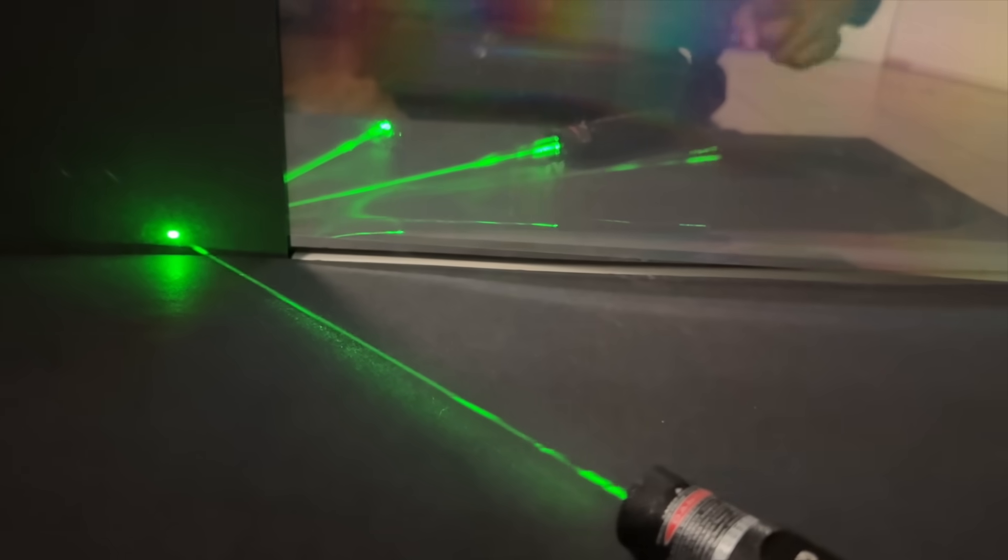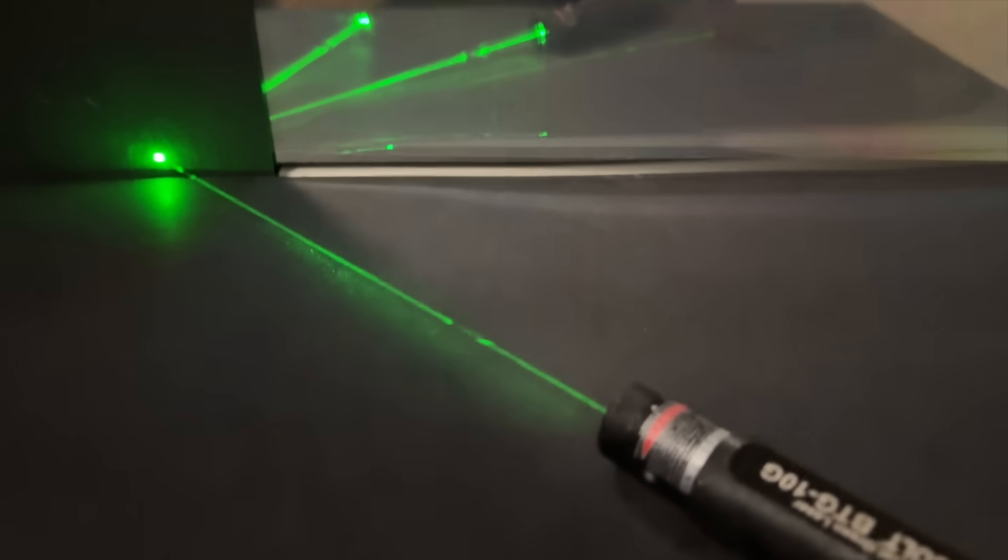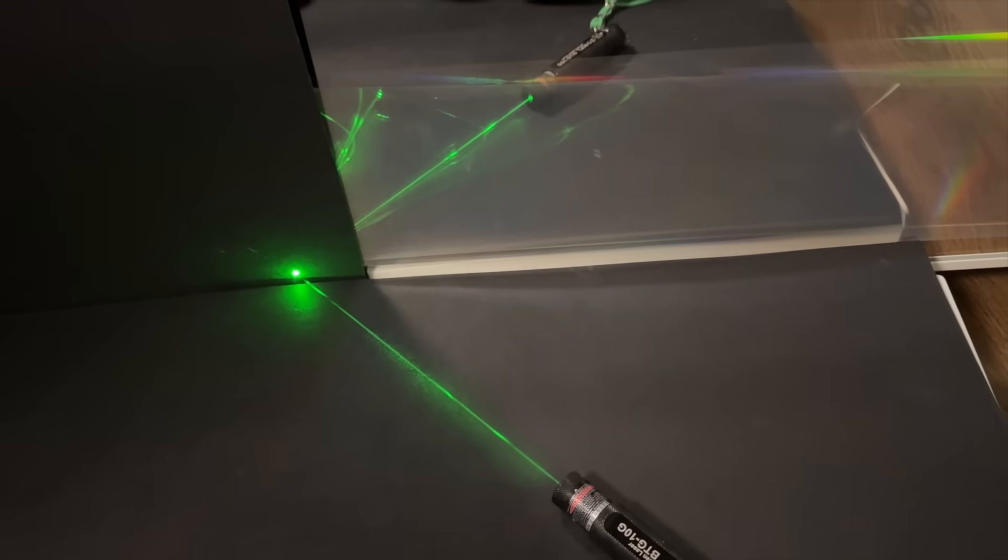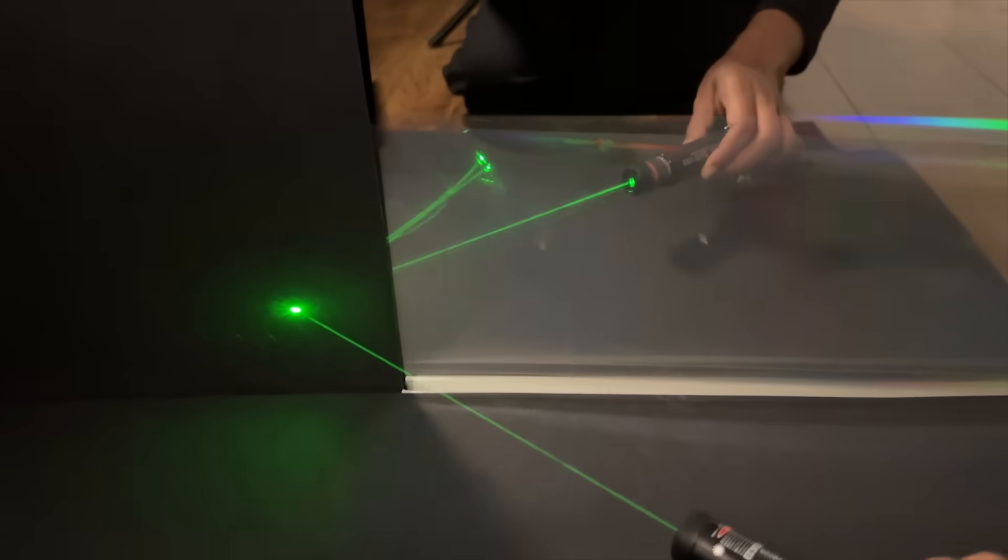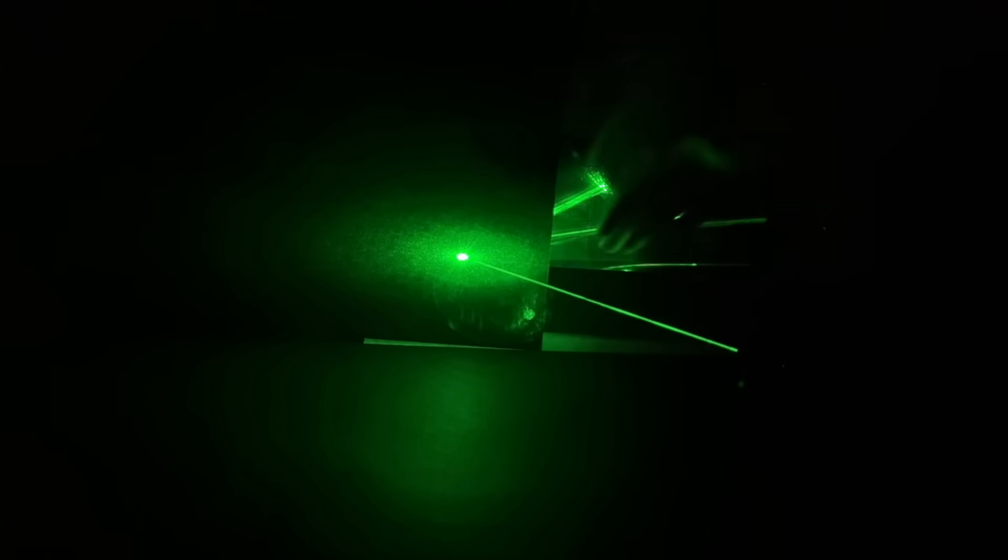Until I saw this video by Veritasium. They do this really cool experiment in it. It seems like you can't explain this experiment except by thinking of light as particles. This is crazy because it just seems to prove Feynman right. Which really shocked me, and so I decided that I needed to do this experiment for myself to understand what's going on.